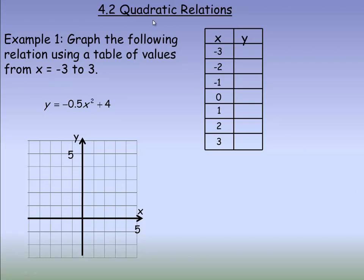In this lesson we'll take a look at quadratic relations. In the first example we're going to graph the relation y equals negative 0.5x squared plus 4 using a table of values. It's fairly normal to take x values from about negative 3 to 3, or negative 2 to 2. Generally you want a few numbers below 0 and a few above — that usually gives you enough to draw the graph. These 7 numbers are the x values of 7 ordered pairs we're going to use to graph this relation.